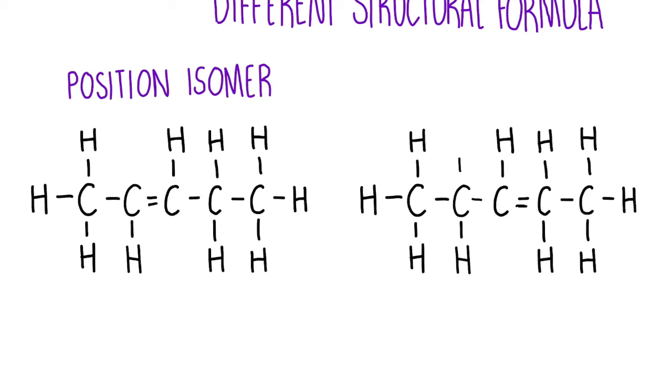I could also do it with an alcohol. I could have an alcohol functional group on the second carbon on one molecule and I could have an alcohol functional group on the third carbon of another molecule. Again, we've got position isomers because those functional groups are in different positions. Pent-2-ol, pent-3-ol are position isomers.